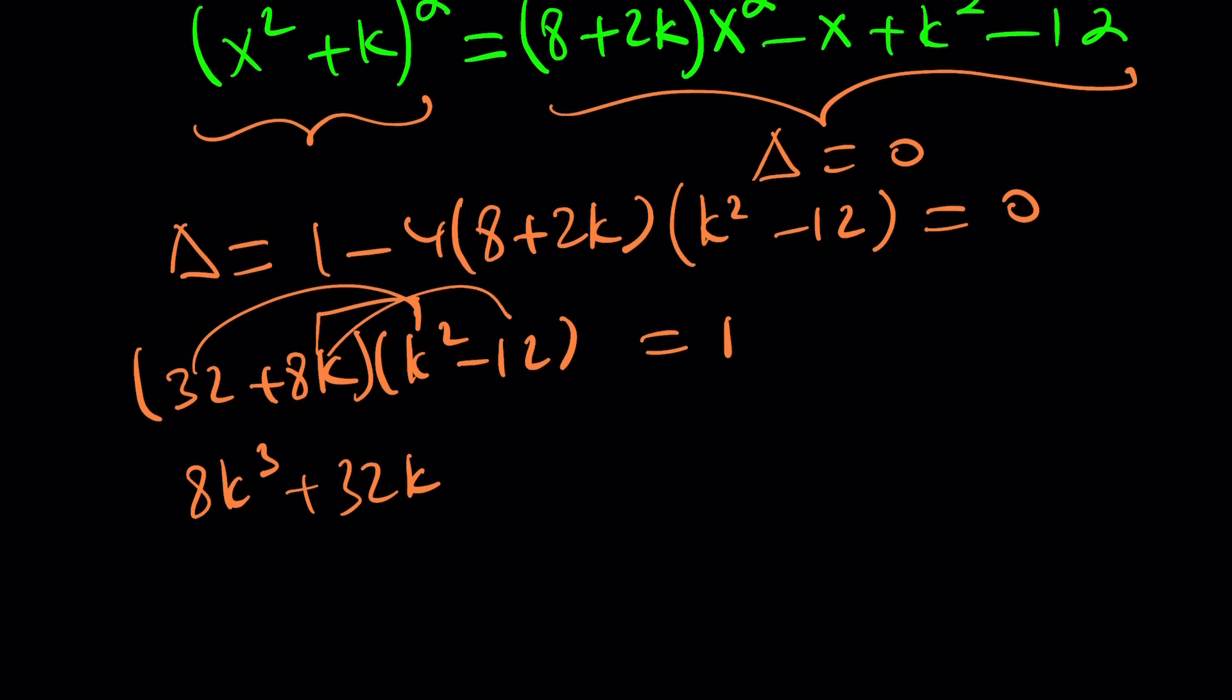So, delta is 0 here. One solution. What is delta? b squared minus 4ac. c is k squared minus 12. And you want it to be 0. Add this to both sides. Isolate. You're going to get 32 plus 8k times this equals 1. And then distribute it: 8k cubed and then 32k squared and 96k and minus 384. That's equal to 1.